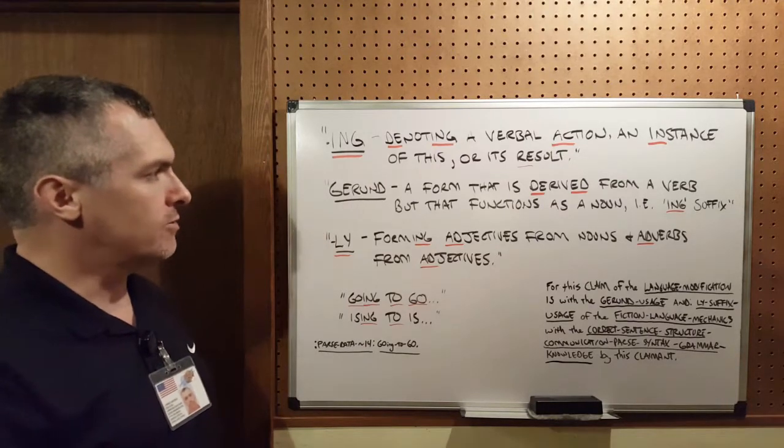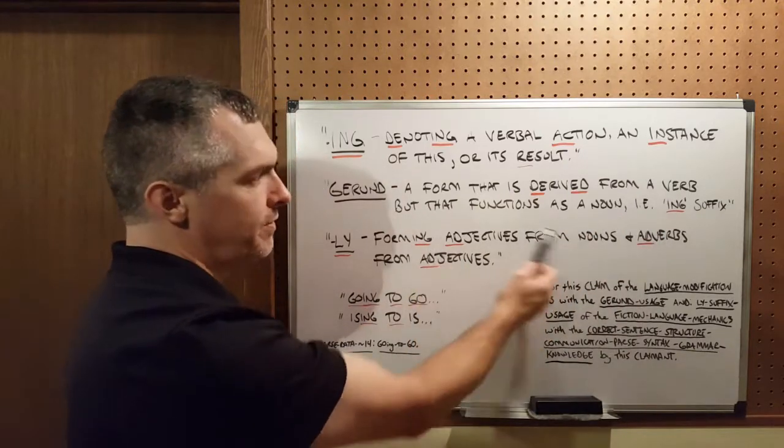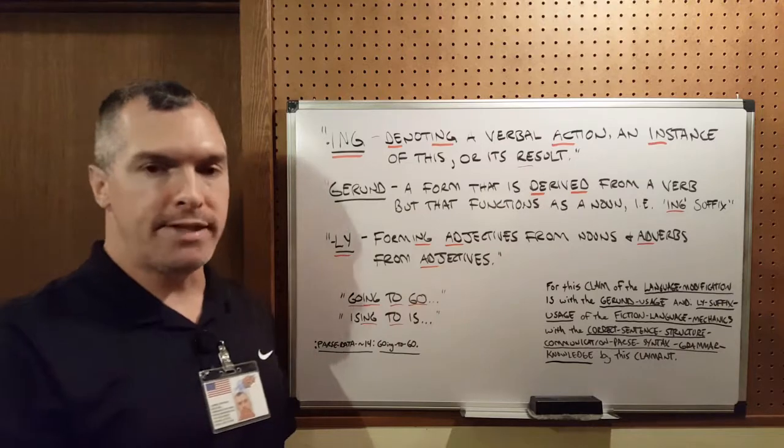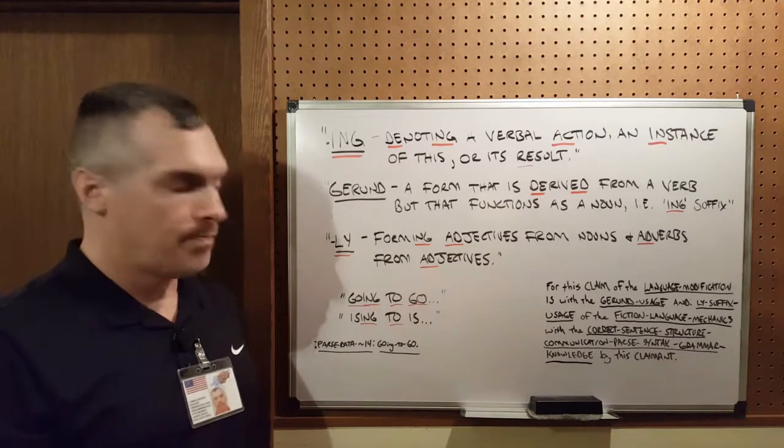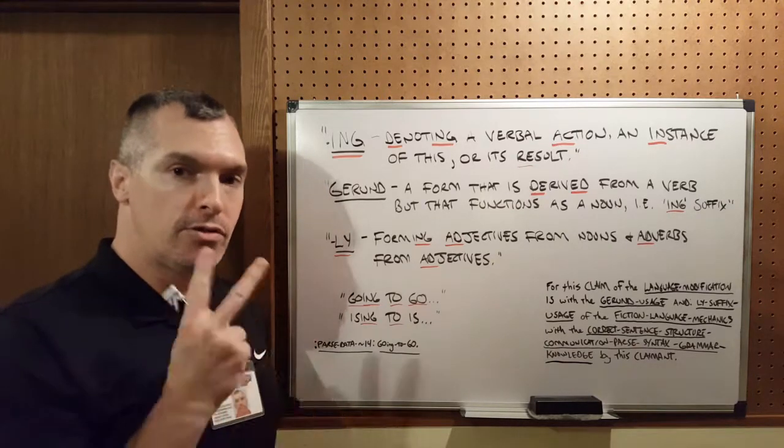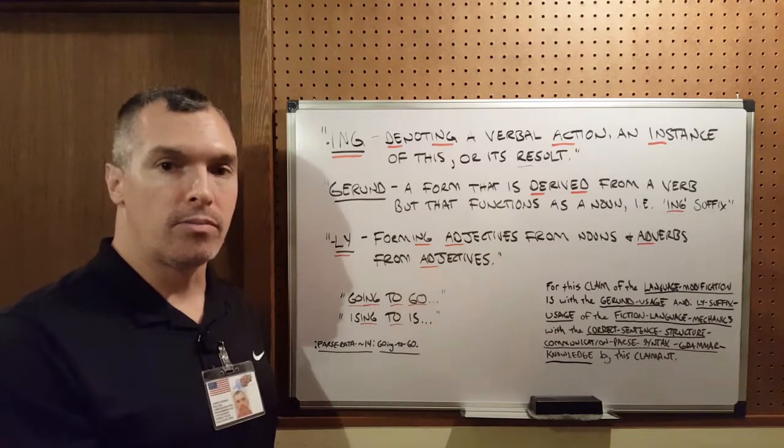That's a gerund, derived from a verb but that functions as a noun. So I should be able to say I'm is-ing to is, I'm are-ing to are. Because in factual language there are only two verbs, is singular and are plural.